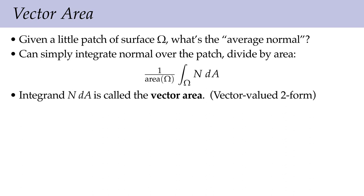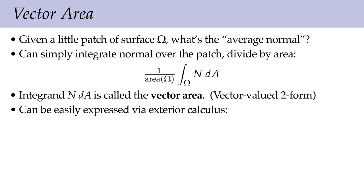The vector area is a vector-valued two-form: just as dA takes a pair of tangent vectors and assigns the area of a little parallelogram, n dA assigns that area times the normal at that point. To understand this more carefully, we can connect it very nicely to the immersion f. Consider df ∧ df — we take the differential of the surface and wedge it with itself. Since we're working with R3-valued differential forms, df ∧ df is not simply zero. Evaluating this two-form on a pair of vectors x, y gives df(x) × df(y) minus df(y) × df(x).